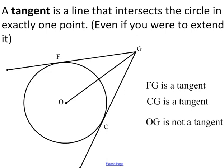A tangent is a line that intersects the circle in exactly one point, even if you were to extend it. So for example, FG is a tangent because it only intersects circle O at one point right over here. Even if I was to extend the line, it would still intersect with the circle at exactly one point. CG is also a tangent because it only intersects the circle at exactly one point.